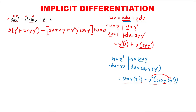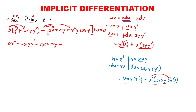Then to simplify, distribute the 3: so this is 3y squared plus 6xy times y prime. Distribute this negative: so negative 2x sine y, distribute this negative, so negative x squared y prime cosine y, then equal 0.